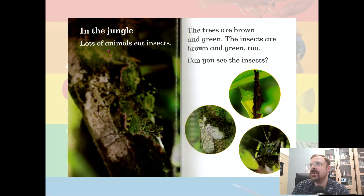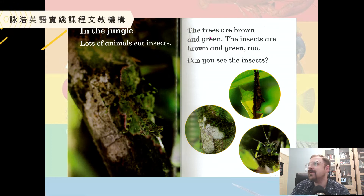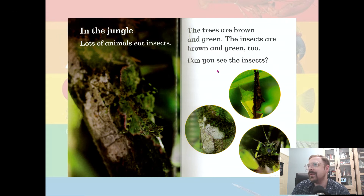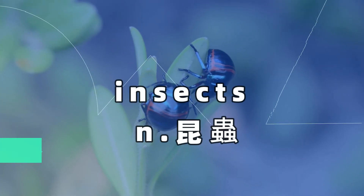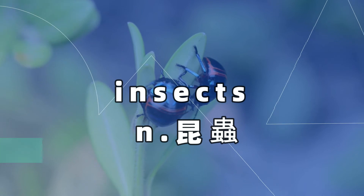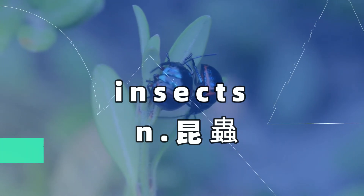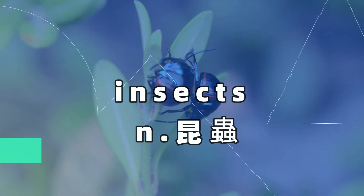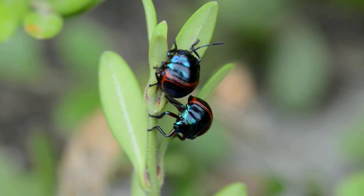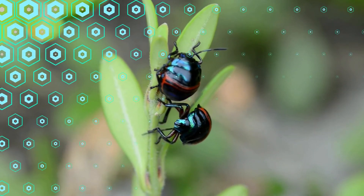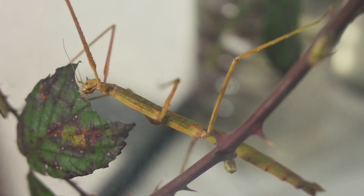In the jungle, lots of animals eat insects. The trees are brown and green. The insects are brown and green too. Can you see the insects? They're hard to see, but they're there if you look very carefully. Some insects look like leaves — we call them stick insects or leaf insects.